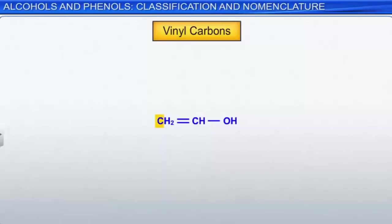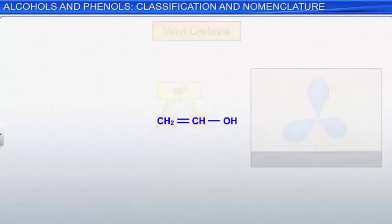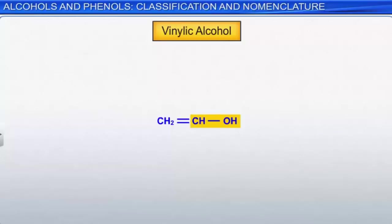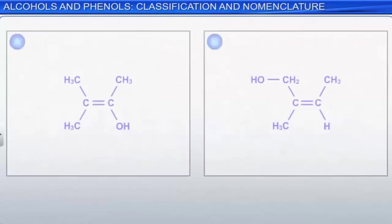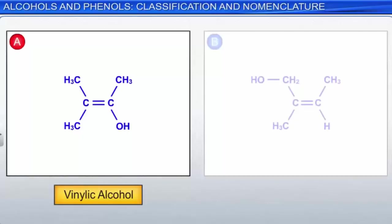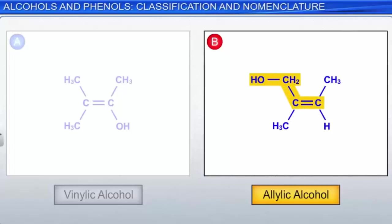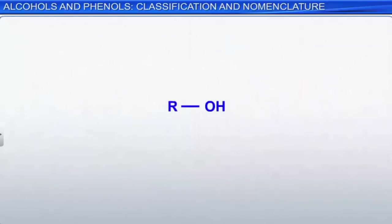A vinyl carbon is a carbon atom double bonded to at least one other carbon atom. Vinyl carbons, also called alkenyl carbons, are sp2 hybridized. A vinylic alcohol contains a hydroxyl group attached to a vinyl carbon. Structure A shows a vinylic alcohol, where the hydroxyl group is linked to a carbon participating in a carbon-carbon double bond. Structure B shows an allylic alcohol, where the hydroxyl group is bonded to a carbon adjacent to a carbon-carbon double bond.